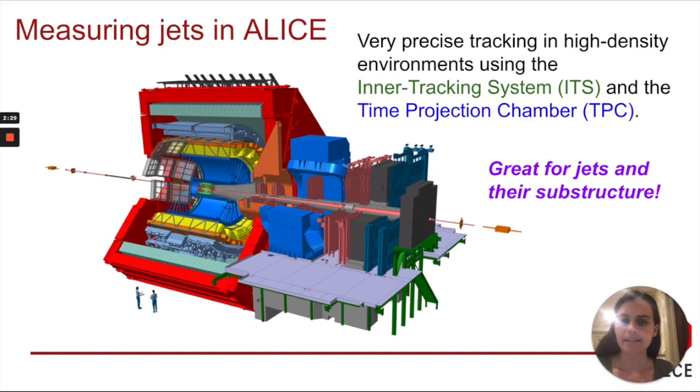In order to measure jets in ALICE, we benefit from the very precise tracking in high-density environments, which is done predominantly using the inner tracking system shown in green and the time projection chamber shown in blue. In general, this is great for measurements of jets and their substructure.